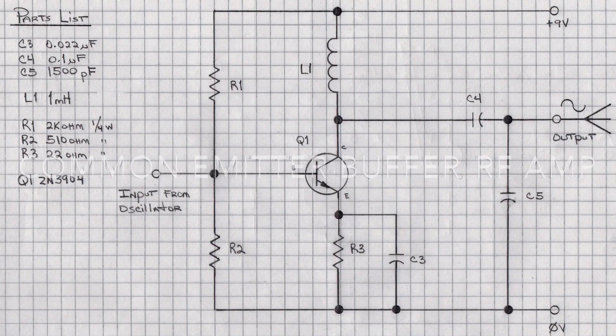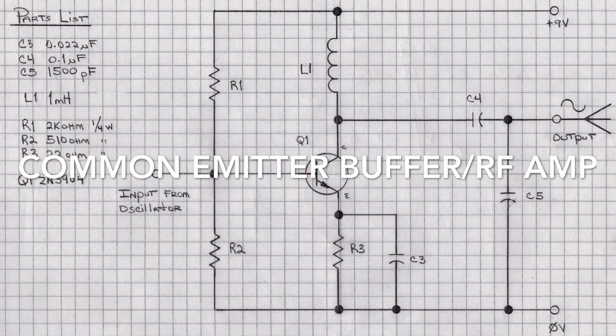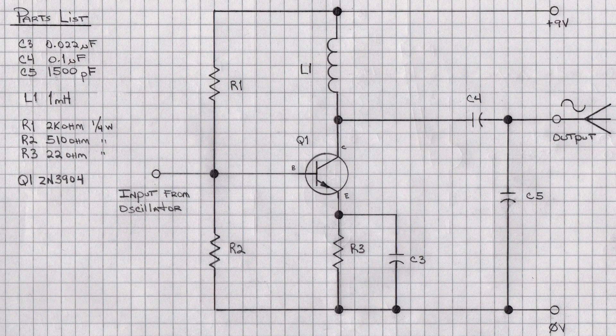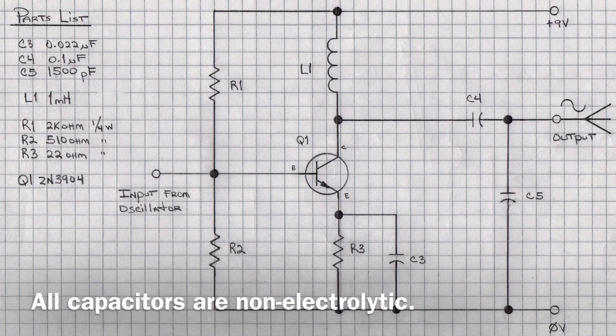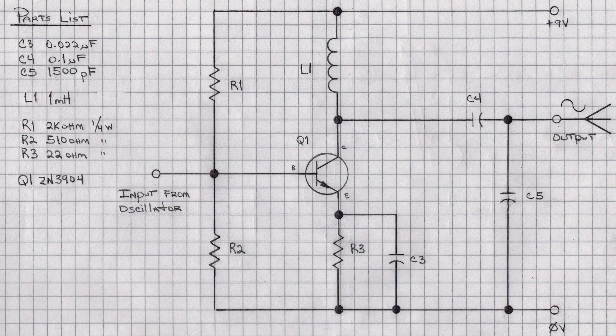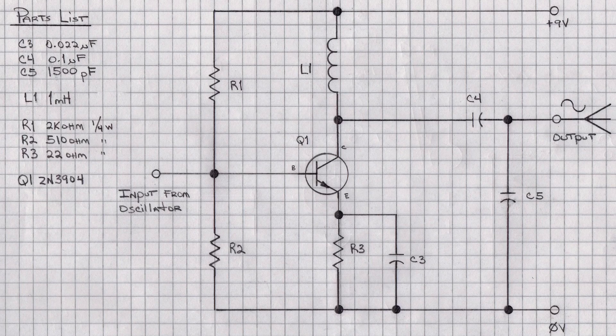Let's move along now to the common emitter buffer RF amplifier that I elected to use. As you can see, the design here of the RF amplifier closely mirrors that of the oscillator circuit with the exception of L1, a simple 1 millihenry choke. Otherwise, the design itself follows your typical common emitter design.